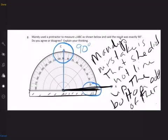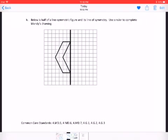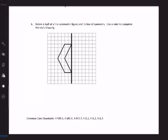All right, let's go to the last one. We're on H. Below is half of a line symmetric figure and its line of symmetry. Use a ruler to complete Mandy's drawing. So that means that we need to mirror this image on the other side.